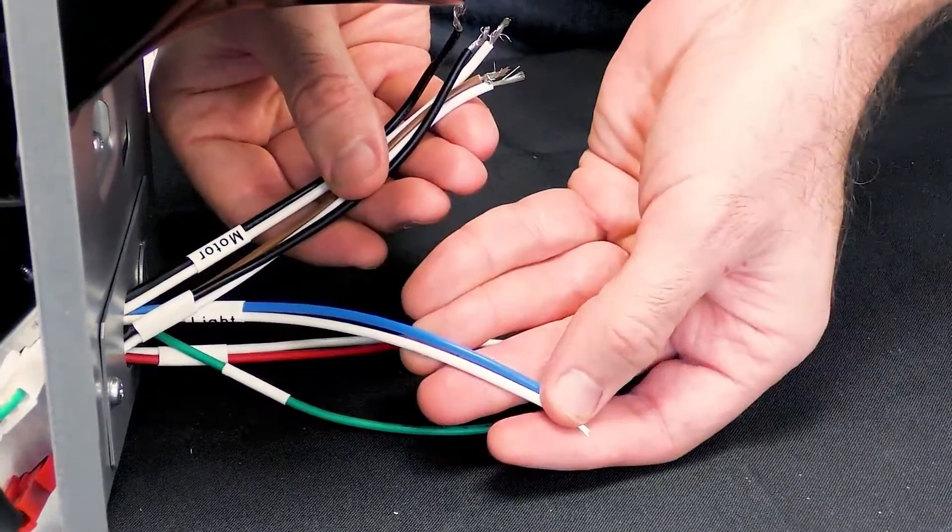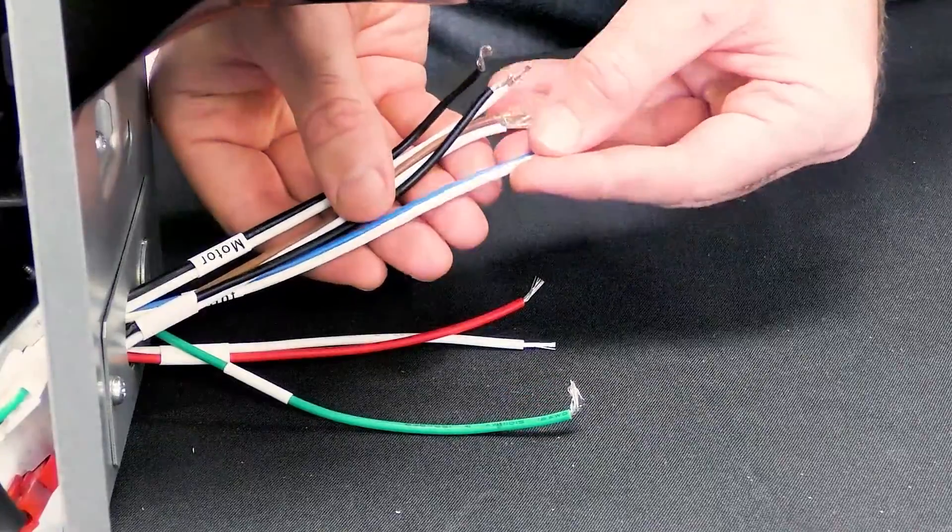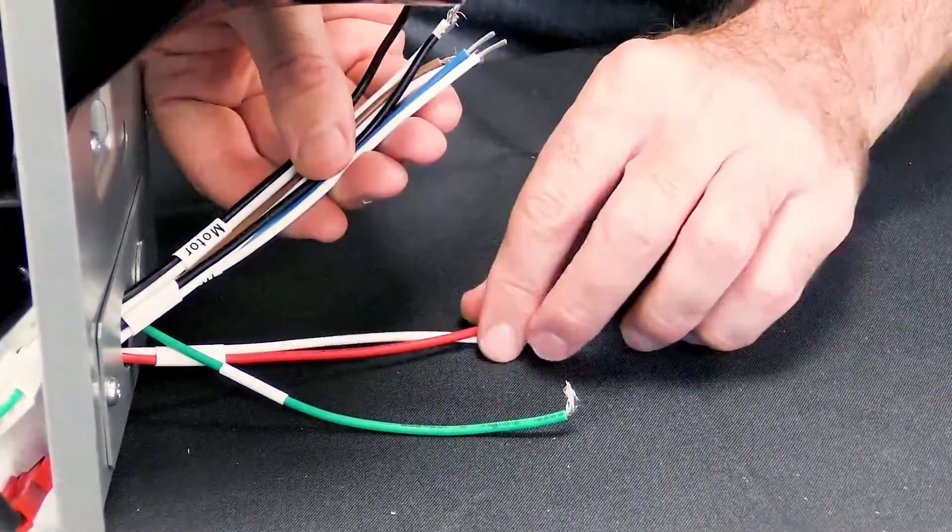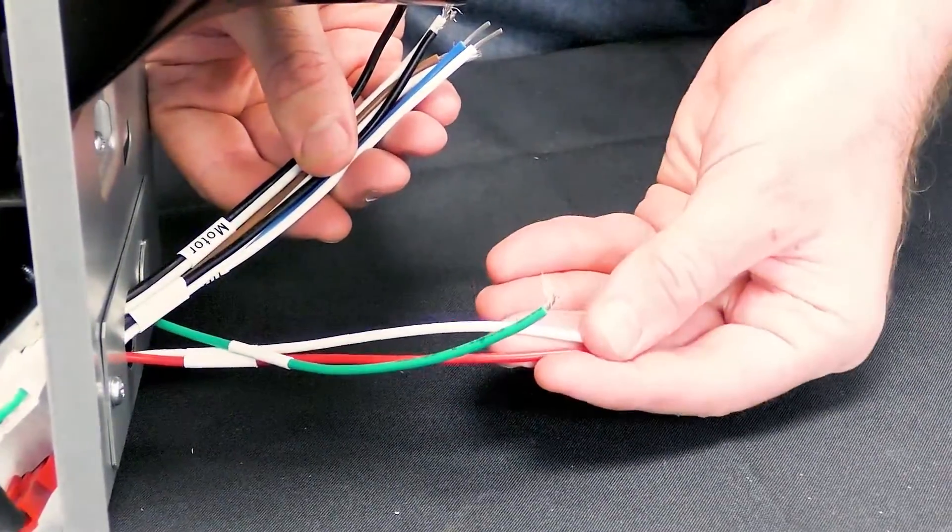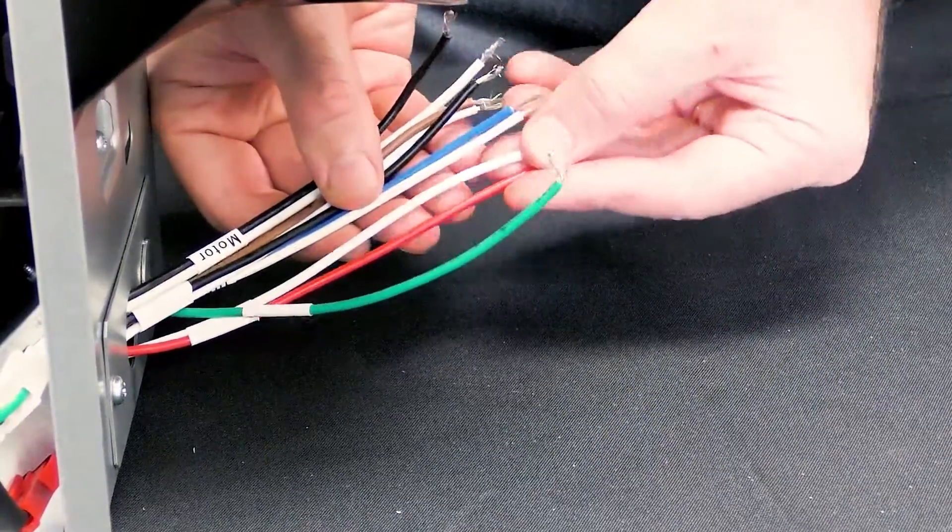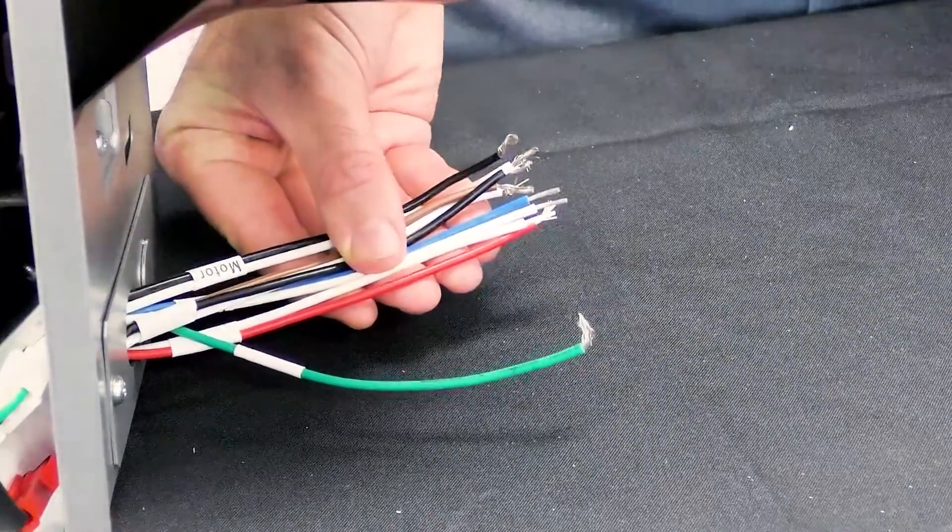The next wiring harness to locate is composed of blue and white wires and is the main light. Finally, locate the red and white wires that controls the nightlight.